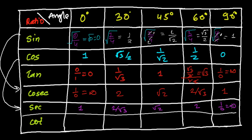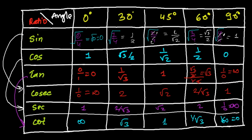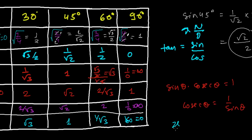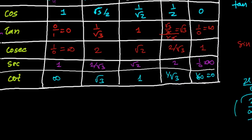For cotangent, it's just the reciprocal of tangent. Cot 0° = reciprocal of 0, which is again undetermined. Cot 30° = reciprocal of 1/√3 = √3. Cot 45° = reciprocal of 1 = 1. Cot 60° = reciprocal of √3 = 1/√3. Cot 90° = reciprocal of infinity = 0, because 1/∞ = 0.